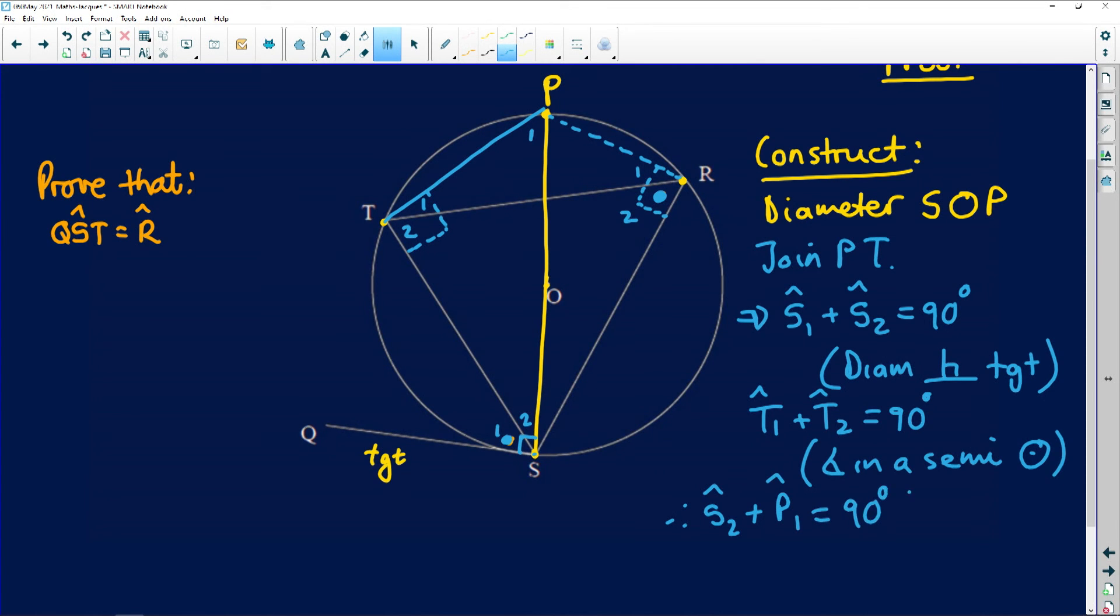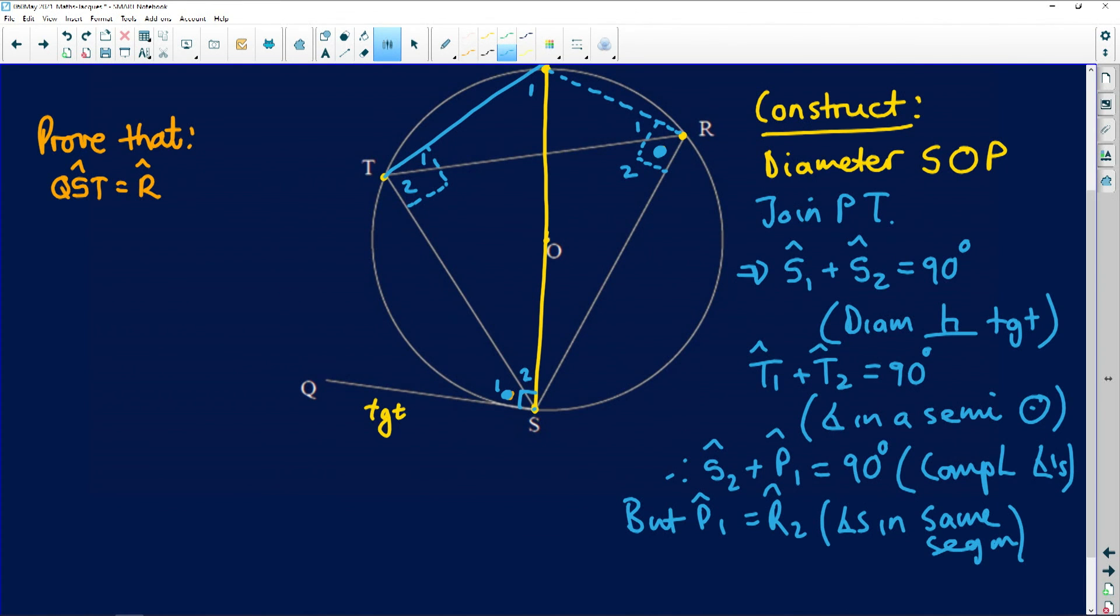And then the simple - but P1 is equal to R2. Why is that the case? Well if you look carefully, they're both subtended by TS, so they are angles in the same segment. And with that, then I can finally conclude that S1 is definitely equal to R2, which is what I wanted.